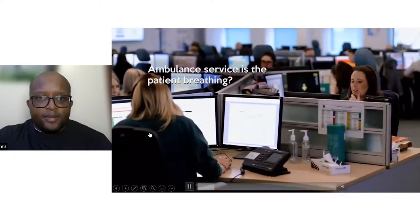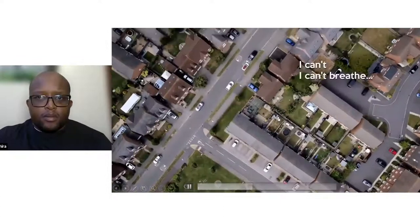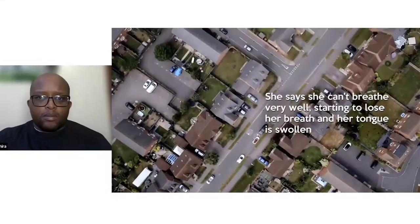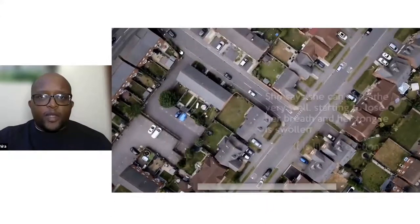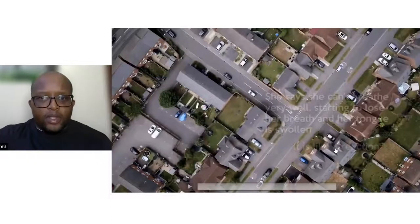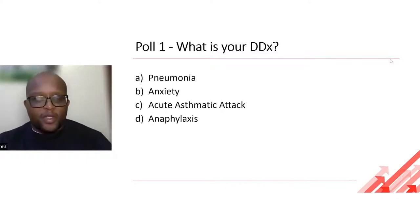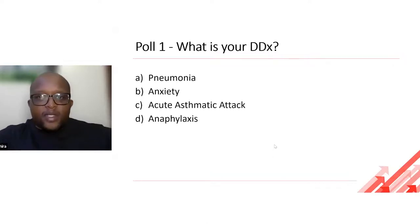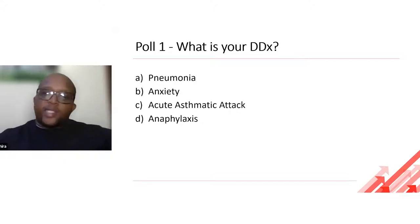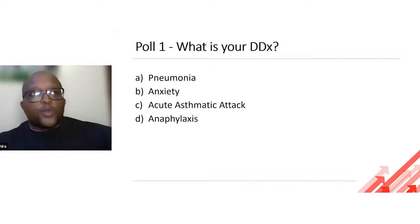The ambulance service reports: patient is breathing, but can't breathe very well, and the tongue is swollen. Based on the differential diagnosis discussed, most of you correctly identified this patient as having anaphylaxis. The cue here was tongue swelling — you don't have tongue swelling in asthmatic attacks and you don't have tongue swelling in anxiety. So yes, this is anaphylaxis.